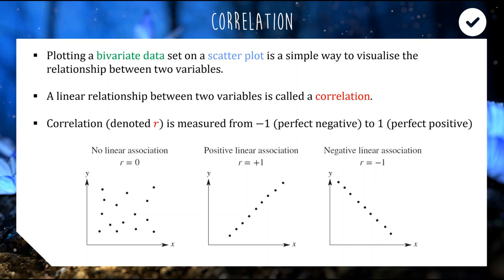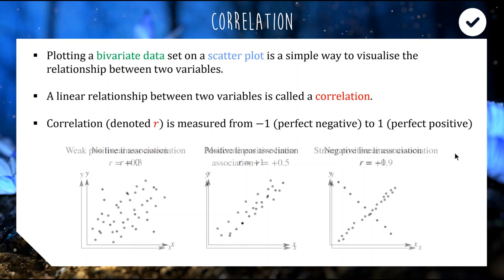If it's a perfectly straight line with a negative relationship, you'll get an r value of negative one. So there's our spectrum — we range from negative one through to zero to positive one, and these are our extremes. We can be in between here if we have some correlation but not a perfect one.